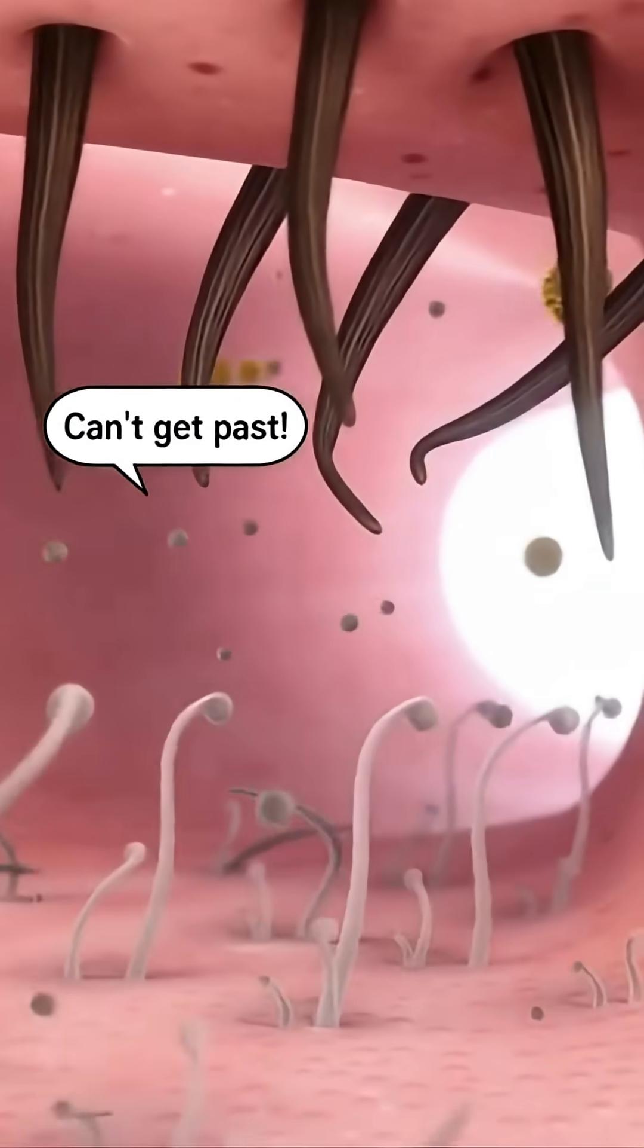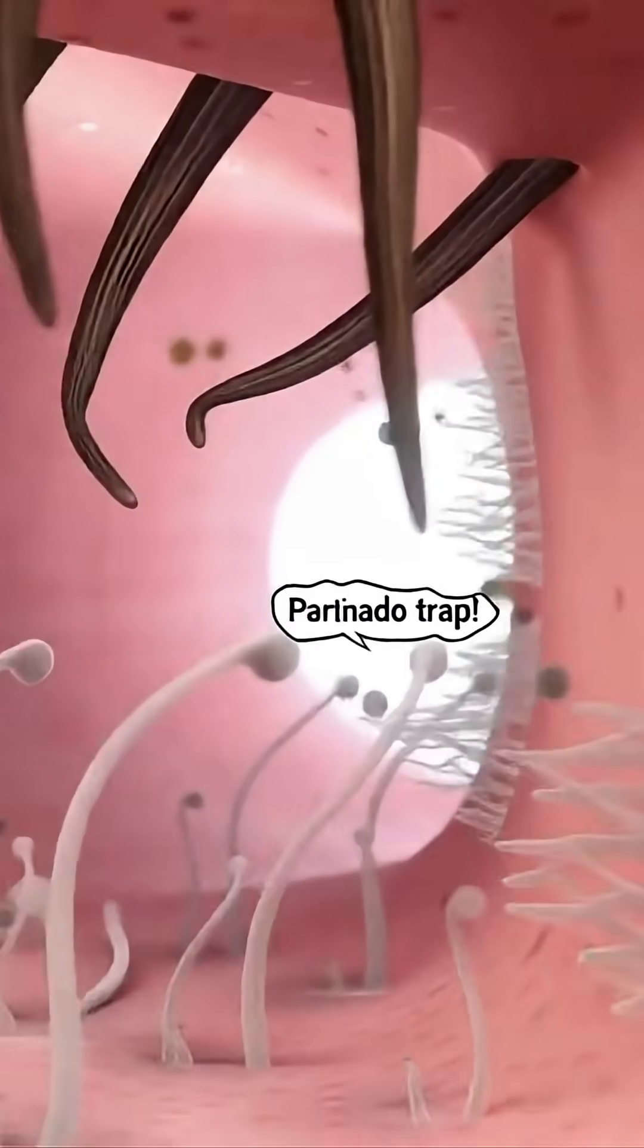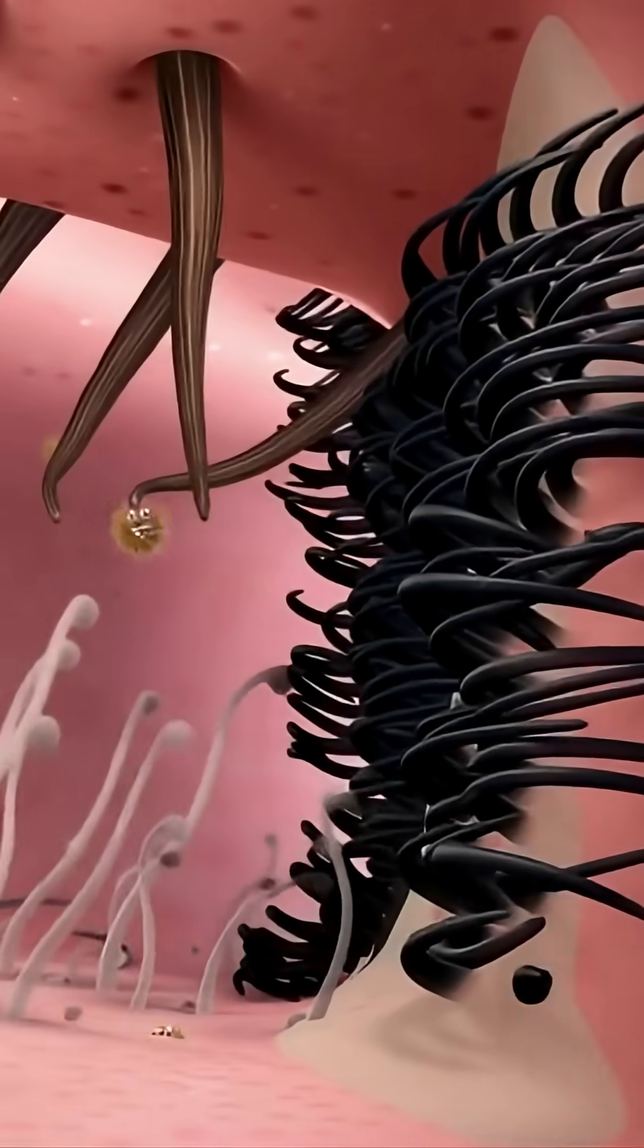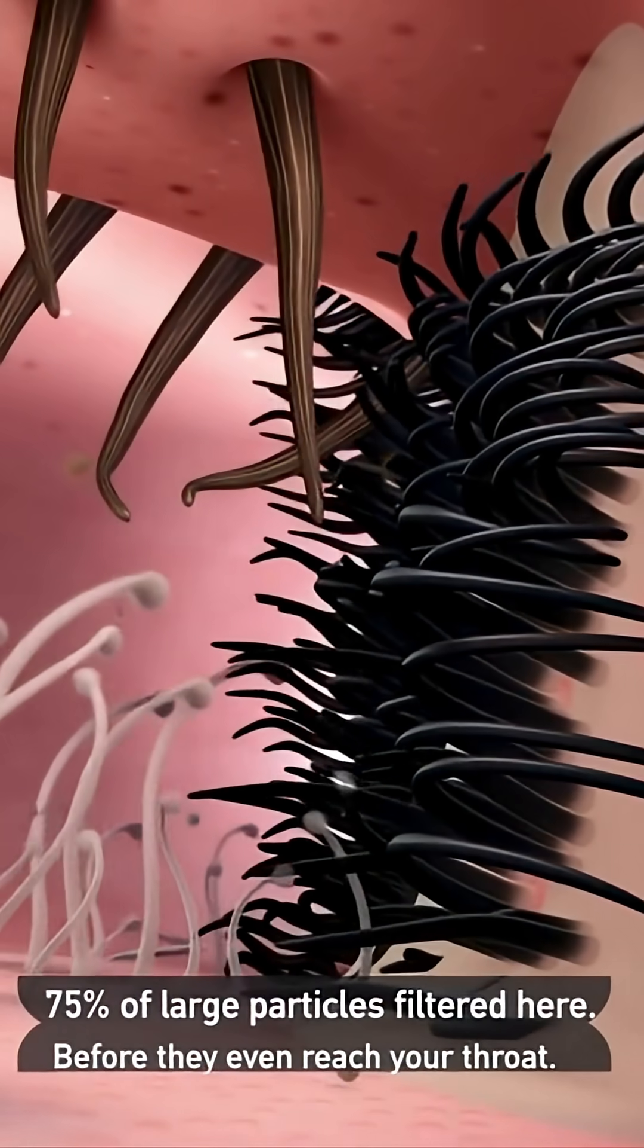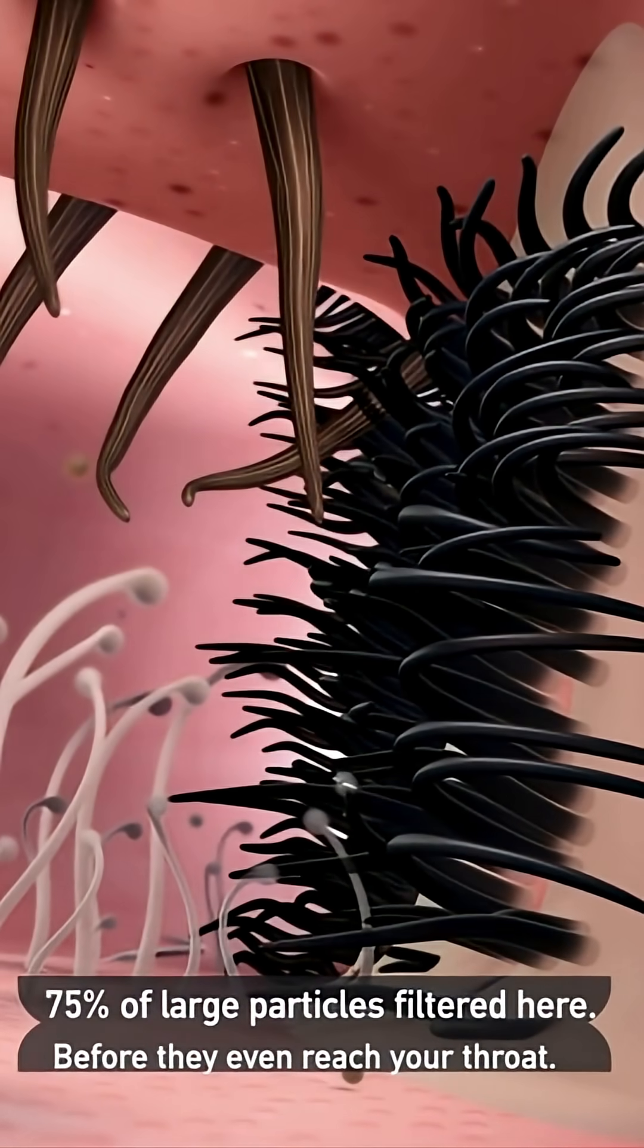Take it past! At the entrance, coarse nose hairs block big intruders. Deeper in, curved turbinates swirl the air, flinging particles onto sticky mucus. Beating cilia form a moving wall, sweeping the debris away.